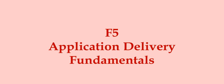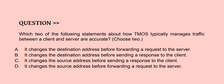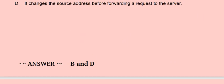Today's question is: which two of the following statements about how TMOS typically manages traffic between a client and a server are accurate? Choose two options. Option A: it changes the destination address before forwarding a request to the server. Option B: it changes the destination address before sending a response to the client. Option C: it changes the source address before sending a response to the client. Option D: it changes the source address before forwarding a request to the server. The correct answer is Option B and D.